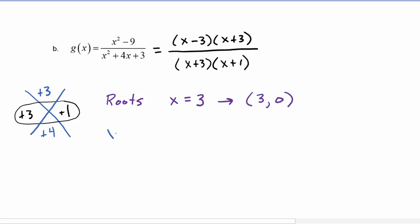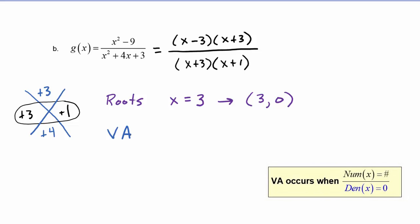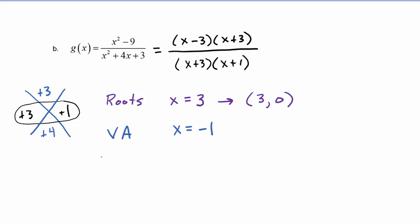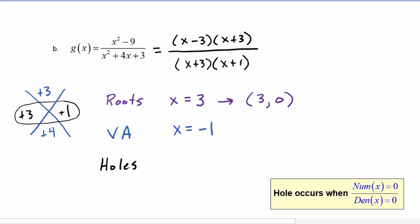Next, finding the vertical asymptotes: they occur when the denominator is zero but the numerator is not. The denominator is zero at negative three and negative one. At negative three, the numerator is also zero, so that is not a vertical asymptote. The only vertical asymptote is x equals negative one. The hole occurs where the common factor gives x equals negative three.